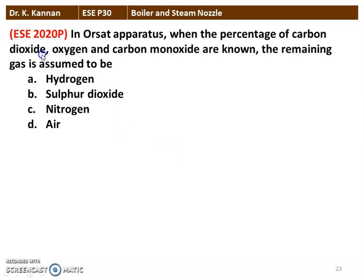The next question from the 2020 question paper: in the Orsat apparatus, when the percentage of carbon dioxide, oxygen, and carbon monoxide are known, the remaining gas is assumed to be nitrogen. The Orsat apparatus is used to analyze the exhaust gases from the boiler. The exhaust gas contains carbon dioxide, carbon monoxide due to incomplete combustion, excess oxygen, and the remaining portion is nitrogen, because air contains oxygen which participates in combustion and nitrogen which appears in the exhaust gases.